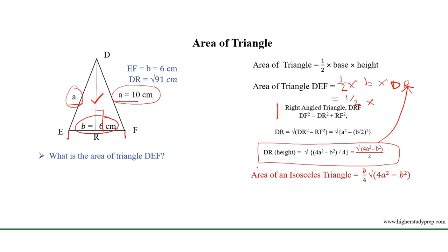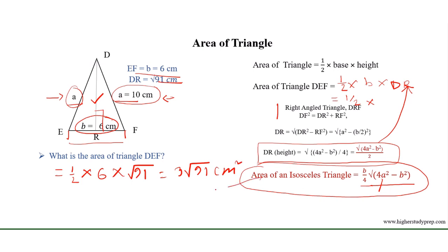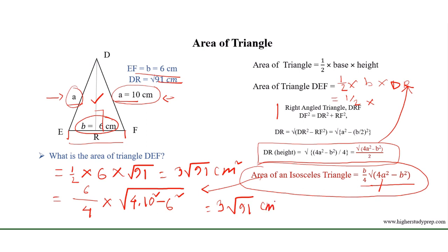Applying this formula, the area of an isosceles triangle equals root over 4A squared minus B squared, multiplied by B over 4, where B is the base and A is the length of the equal sides. So the area of triangle DEF equals one half multiplied by base multiplied by height, which results in 3 root 91 cm squared. Applying the formula: 6 over 4 multiplied by root over 4 times 10 squared minus 6 squared also equals 3 root 91 cm squared.